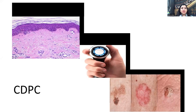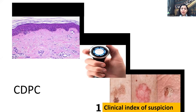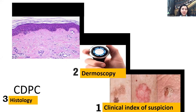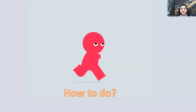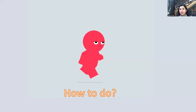There is a term called CDPC. During our training we used to hear 'clinical-pathological correlation,' but now the term has changed to CDPC — clinical-dermoscopic-pathological correlation. We always have a clinical index of suspicion; not all lesions need dermoscopy or biopsy. Whenever we have that index of suspicion, we go for dermoscopy, and then for histology. That's the whole concept of CDPC.